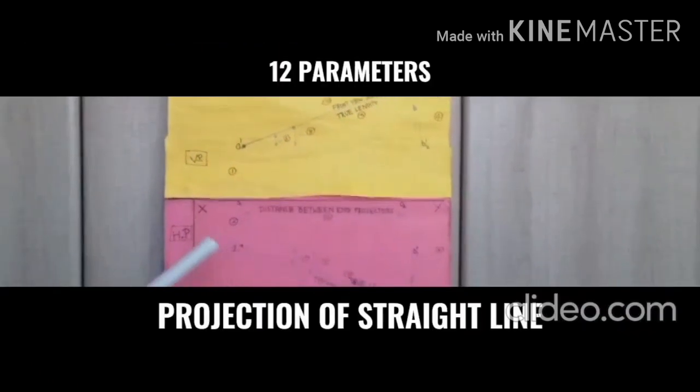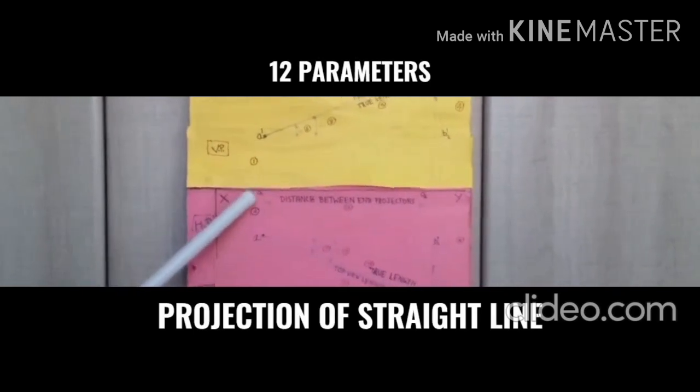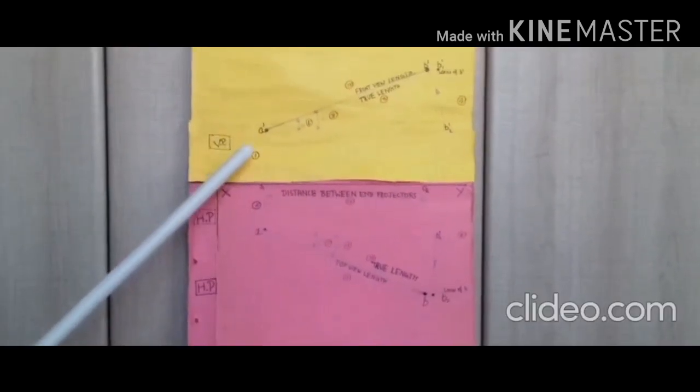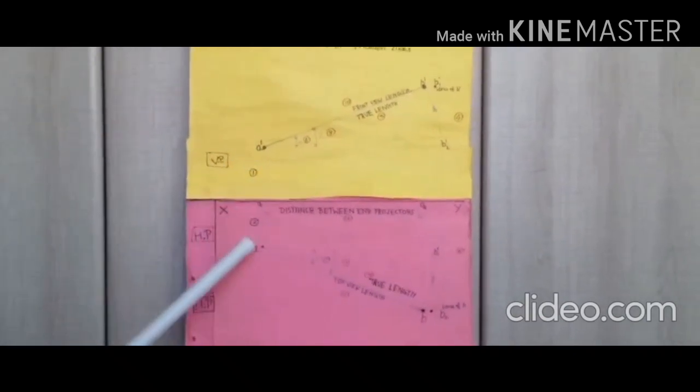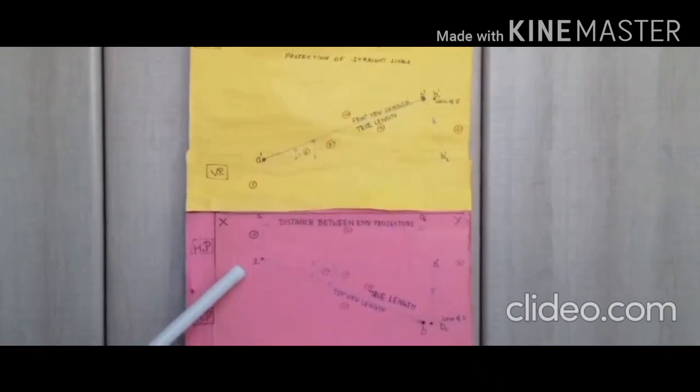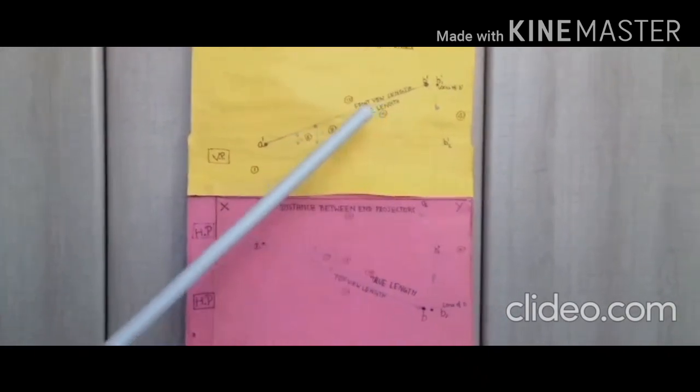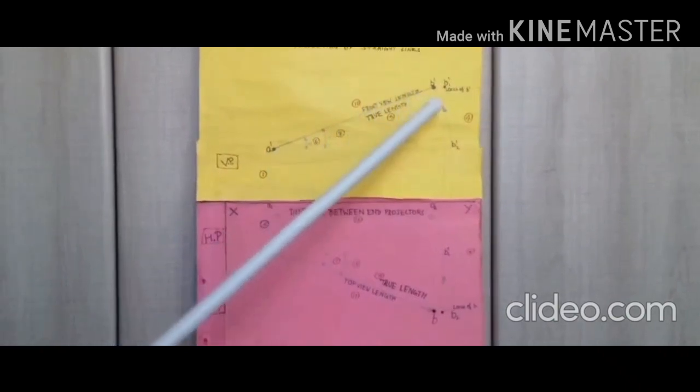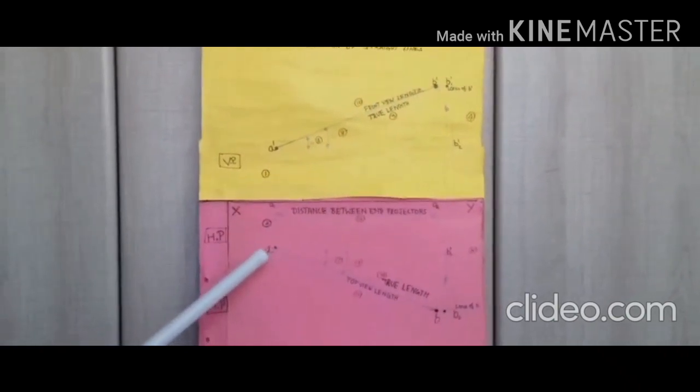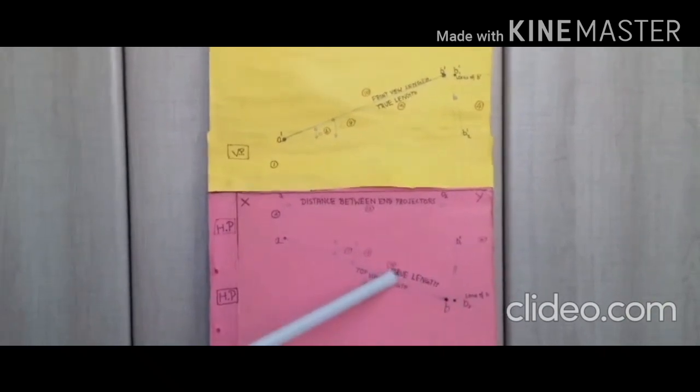Next, we are going to see the important twelve parameters used in this projection of straight line. One: OA', front view position of endpoint. Two: OA, top view position of endpoint. Three: true length of the line, A'B1' and A'B2'. Four: front view position of the second endpoint, OB'.